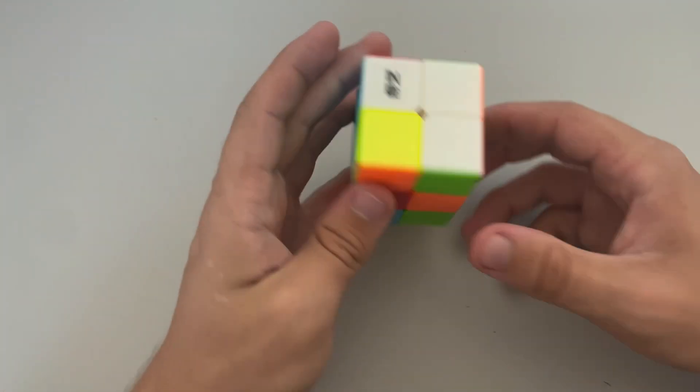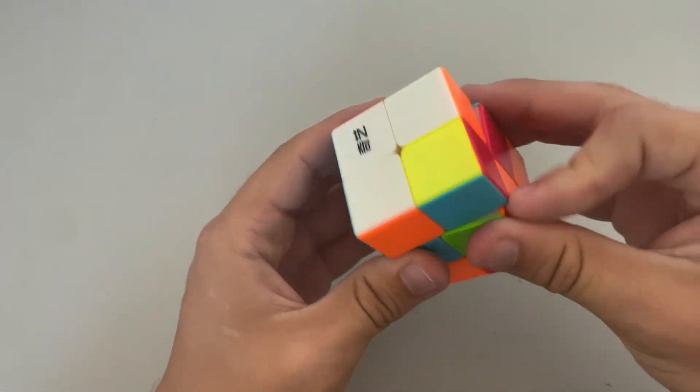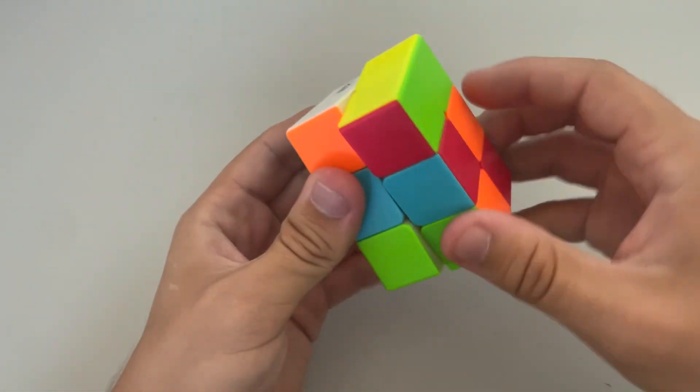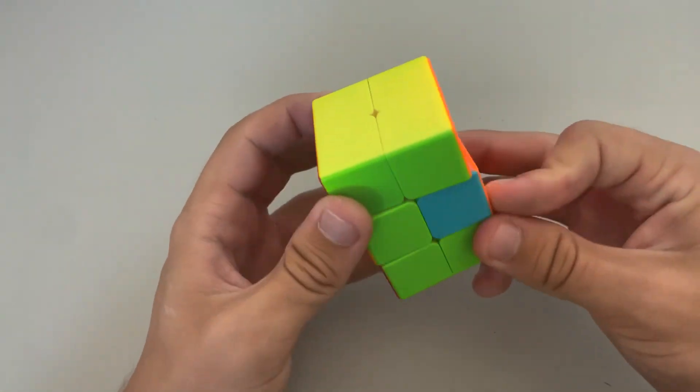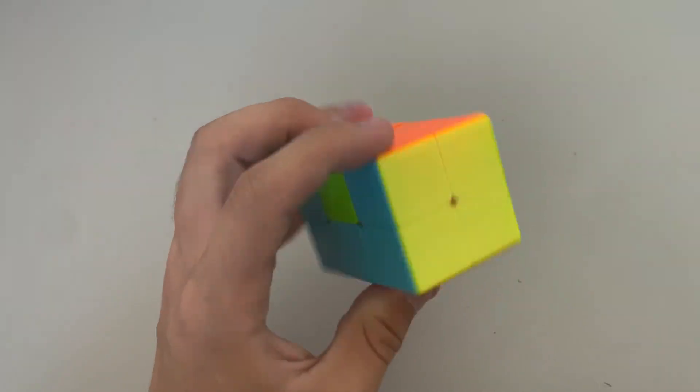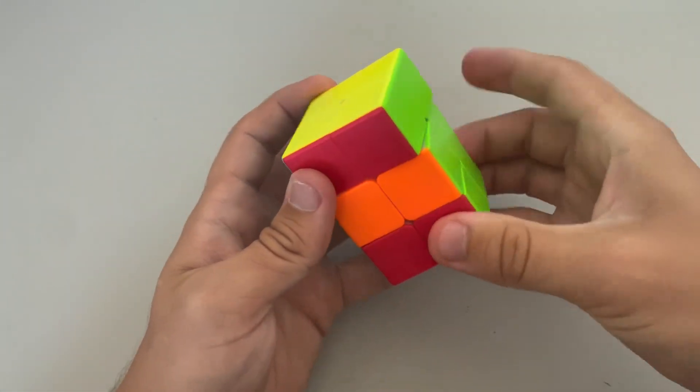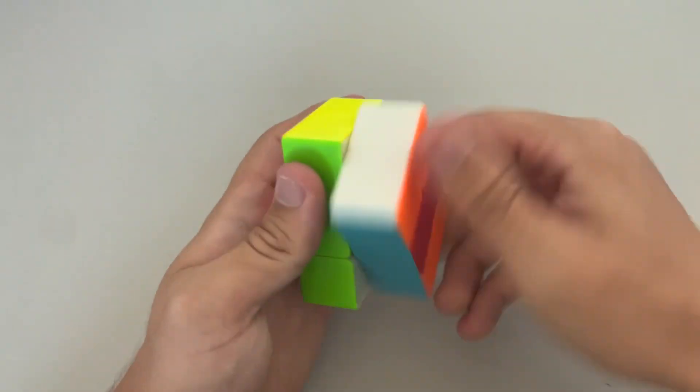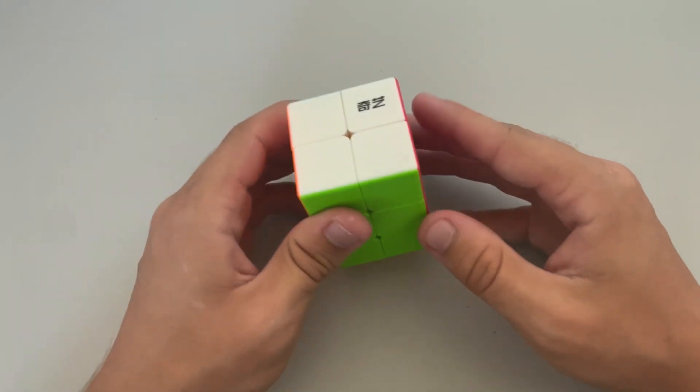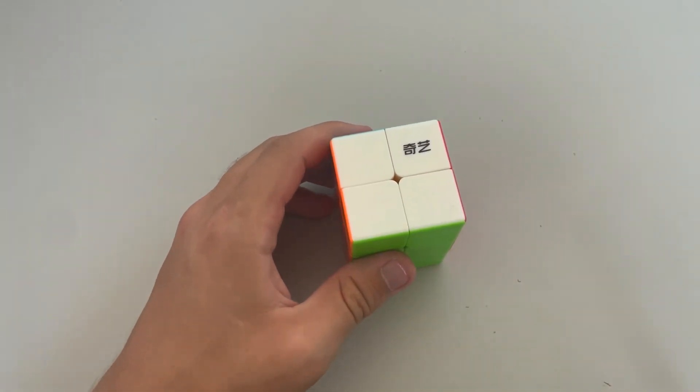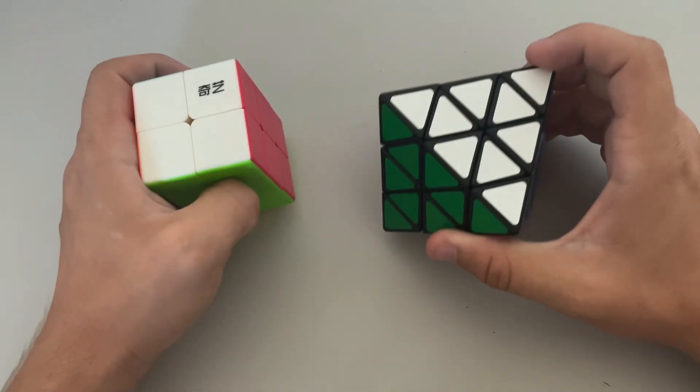But now let's just go ahead and quickly solve this since it's an extremely simple solve. We're going to want to start by getting the white side done. And we can easily do that just like that. And the yellow side is conveniently already solved for us. Oh wait, no, we're not done. We just need to solve the middle layer and then we're done. So that's obviously a very simple solve right there. It's extremely easy to do the 2x2x3.